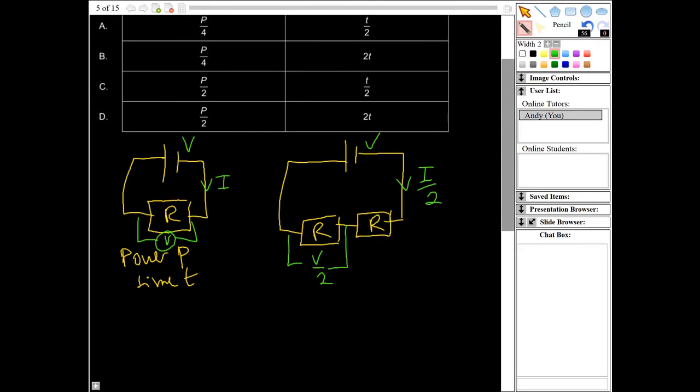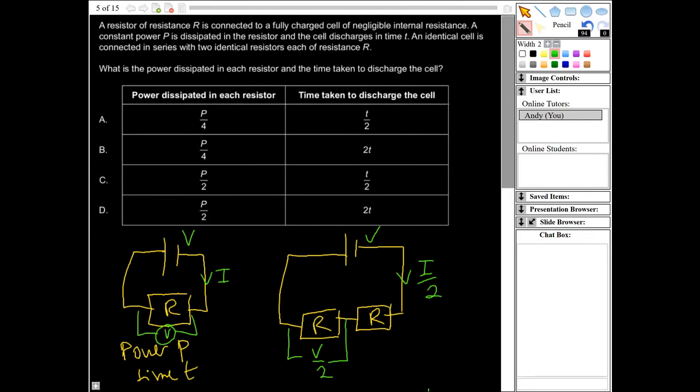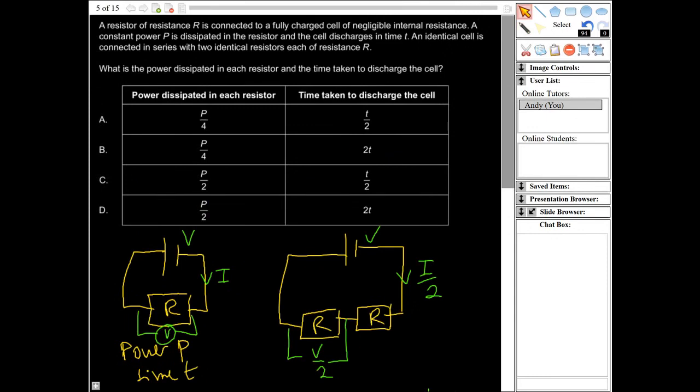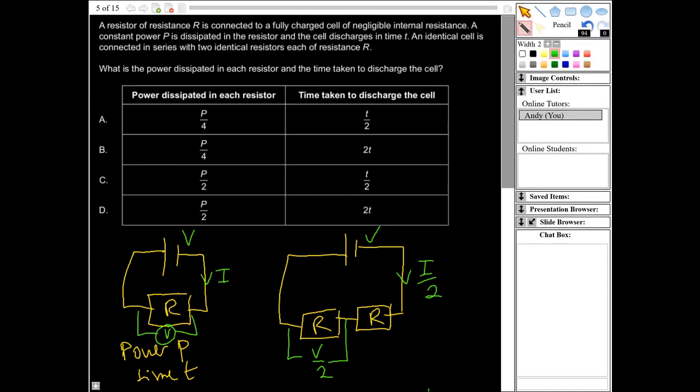Therefore, the power in one resistor, power is equal to I times V, so it's going to be I over two times V over two, so that's going to be I times V over four, or one quarter of what it was previously. So that is therefore going to be either A or B. We can discard C or D. Now additionally, the time taken for the cell to discharge is going to depend on the voltage and on the current. Voltage is the same in both cases. Current here, in the second situation, is halved. So because the current is half, it will take twice as long for the cell to discharge. So the correct answer is going to be B.